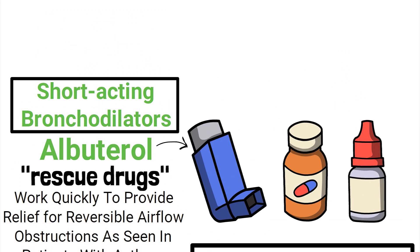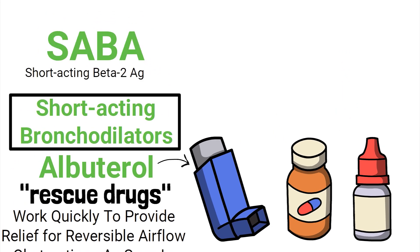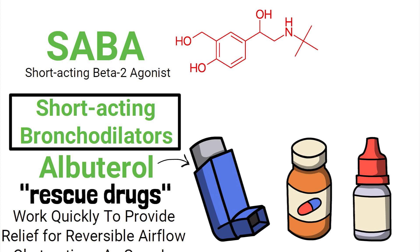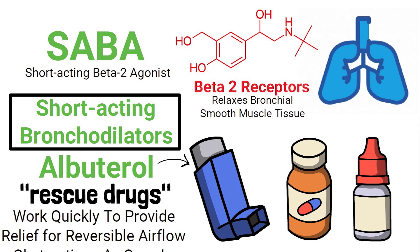You may have also heard it referred to as a SABA, or short-acting beta-2 agonist. It causes stimulation of the beta-2 receptors, which relaxes bronchial smooth muscle tissue to help the airways open back up.